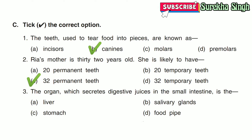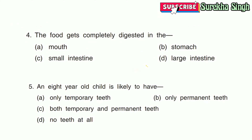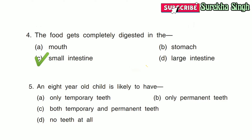3. The organ which secretes digestive juices in the small intestine is: Option A — Liver, Option B — Salivary glands, Option C — Stomach, Option D — Food pipe. Here Option A is correct: Liver. 4. The food gets completely digested in: Option A — Mouth, Option B — Stomach, Option C — Small intestine, Option D — Large intestine. Here Option C is correct: Small intestine.